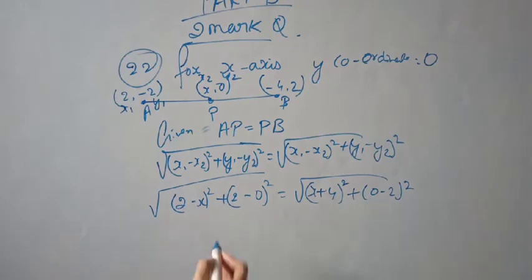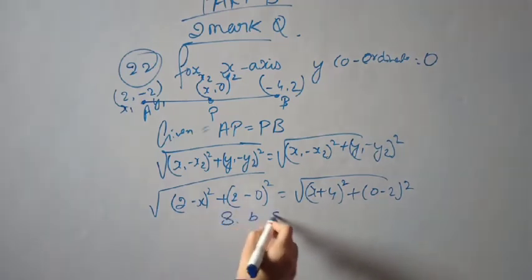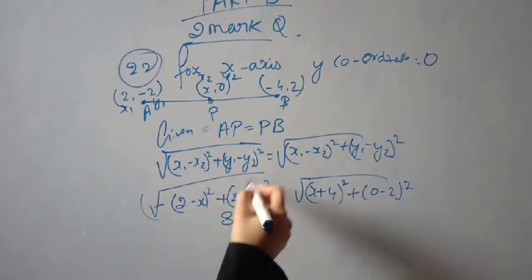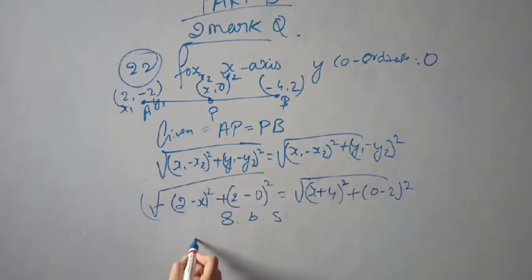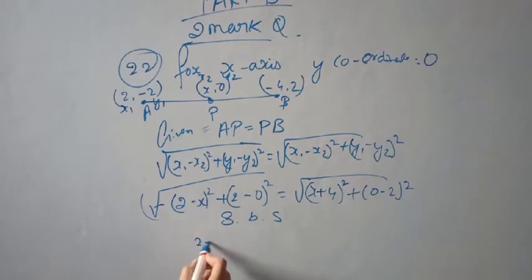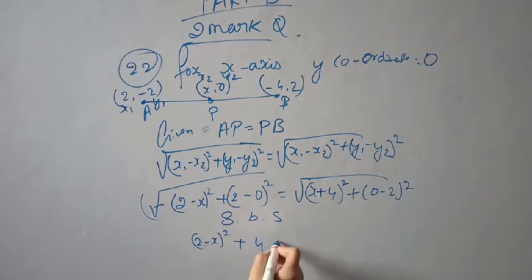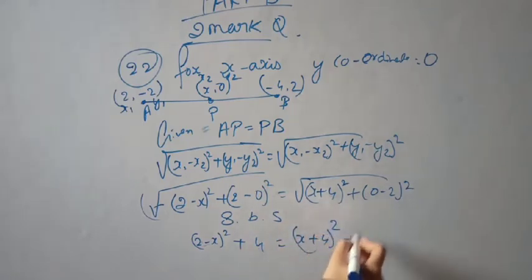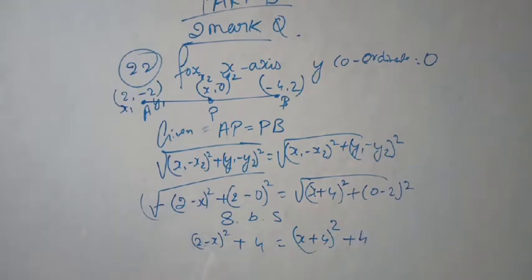Squaring both sides to remove the square roots. So remaining: (2 - x)² + 4 = (x + 4)² + 4. The 4 and 4 cancel on both sides.